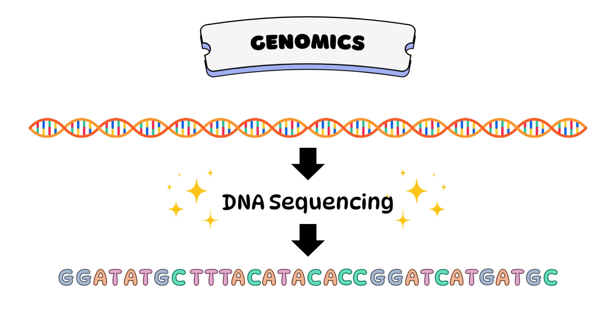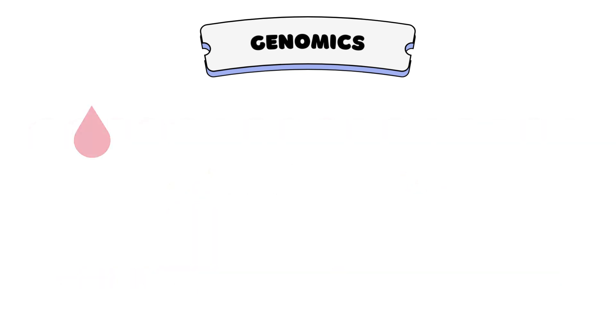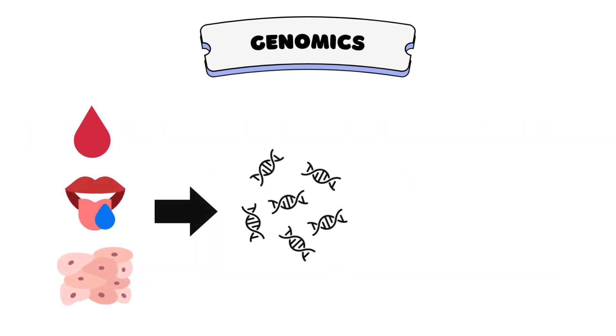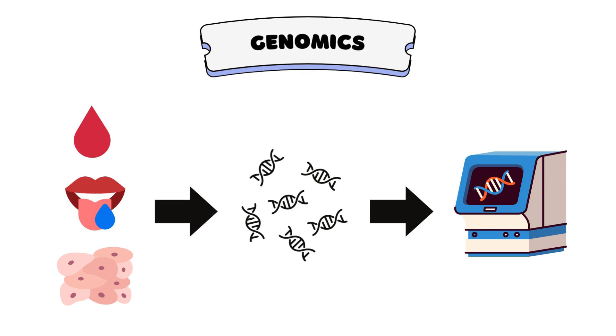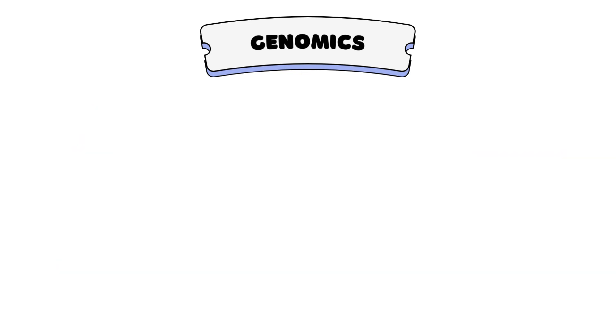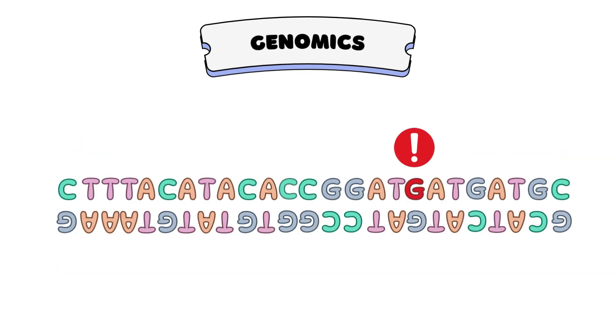Genomics researchers can access the exact order of bases in a DNA molecule through DNA sequencing. This is done by extracting DNA from a sample like blood, saliva, or tissue, breaking it up into smaller fragments and running these through a sequencing machine. This method can reveal variations in the DNA sequence that may play a role in the development or progression of a disease.